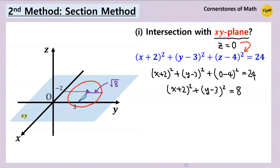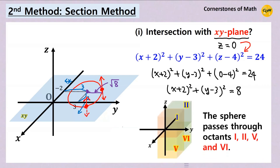Square root of 8 is greater than 2, so the circle protrudes into this section of the xy-plane, but does not protrude into the opposite section. The circle existing in this part means the sphere exists on both sides of the plane in those regions. Since we also have a circle in this other part, the sphere exists on both sides there too. In terms of octants, the sphere passes through octants 1, 2, 5, and 6.